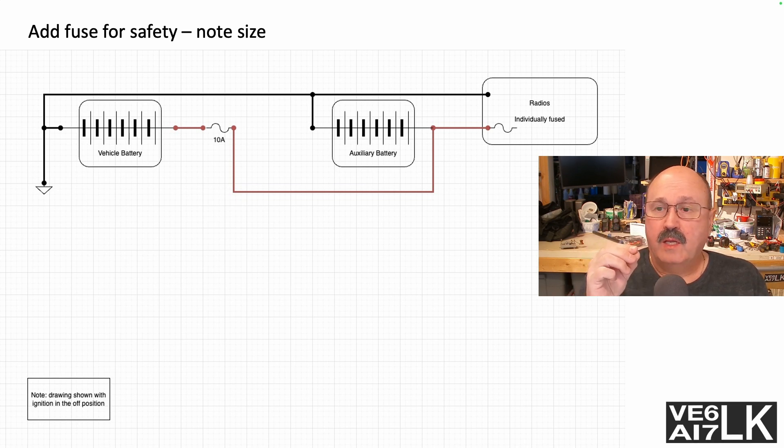That makes it easier because the wire that runs out of the engine compartment down to the auxiliary battery doesn't have to be nearly as heavy, so that's less expensive and makes it easier to run because it's not as heavy.